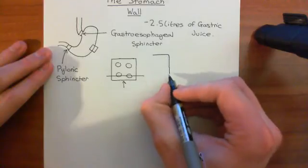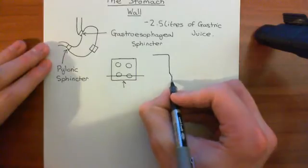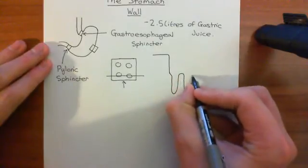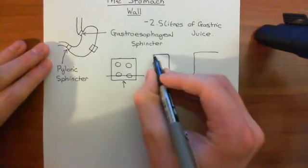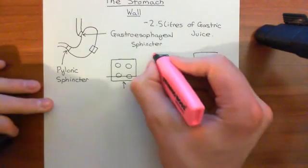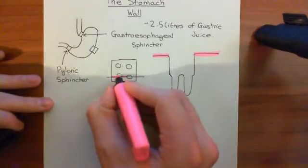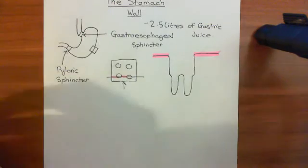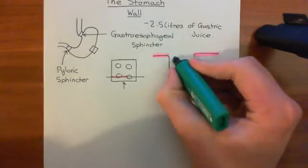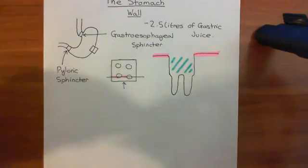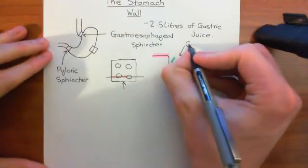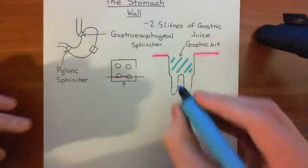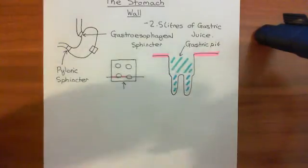We'll take a cross-section and look at what these pits actually are. The surface will suddenly invaginate inwards to form a gastric pit. Coming off the gastric pits, you then have further invaginations which are called gastric glands. So the surface portion here is the gastric pit, and then coming off the gastric pit you have the gastric glands further down below.